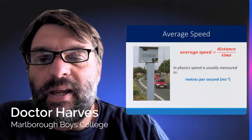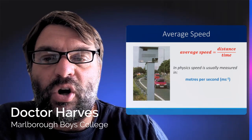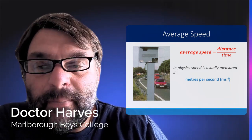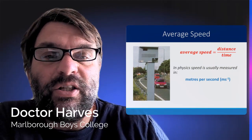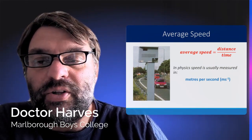So average speed is the distance an object travels over a certain amount of time, and in physics we use the measurement, or the units, of meters per second for speed.